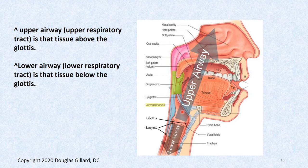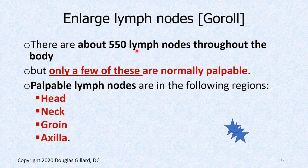The glottis is the demarcation: false folds above, true vocal cords below — that separates the lower from the upper airway. Throughout the body there are between 500 and 550 lymph nodes, but only a few are palpable: head and neck, groin, and axilla.